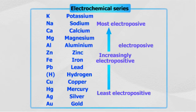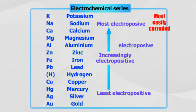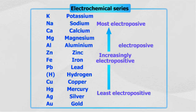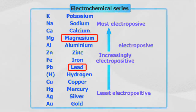Different metals are placed at different positions in an electrochemical series. The higher the position of a metal in the electrochemical series, the higher its electropositivity. Metals higher up in the electrochemical series corrode much more easily, because they tend to release electrons to form metal ions. For example, magnesium is more electropositive than lead, and therefore magnesium corrodes more easily.